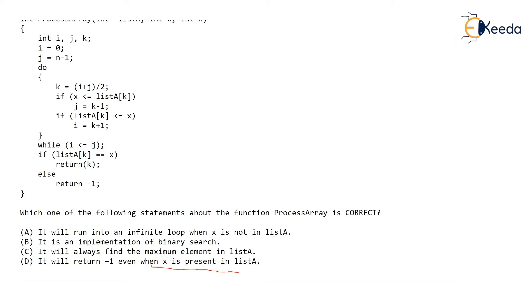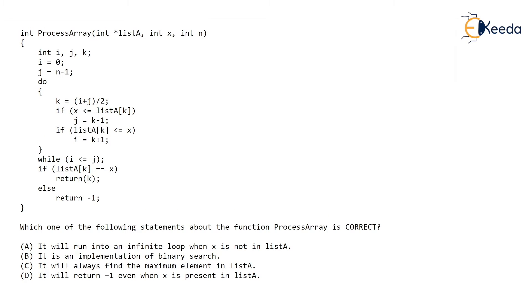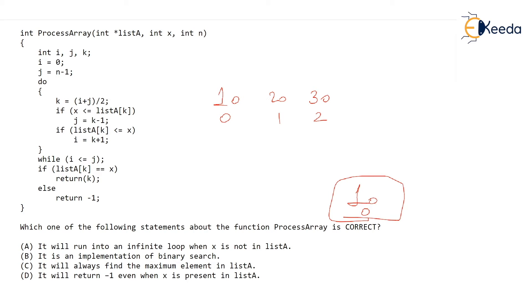Personally, such questions are my favorite — where no specific array is given but it is told the array will have more than 0 elements. In the GATE exam I will always take a very small array. You can even take an array containing only one element. If this function is supposed to be correct, it should work even for a one-element array. I have taken an array containing three elements, and they say i should be 0 and j should be n minus 1, so i is 0 and j is 2.